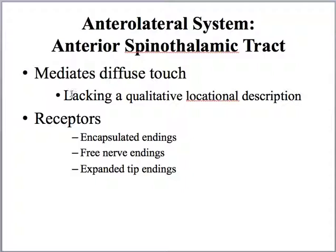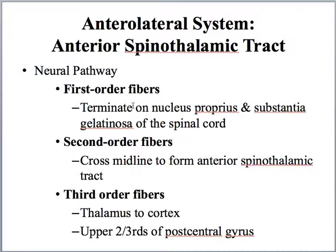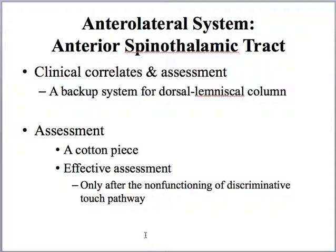The anterior lateral system — the anterior spinothalamic tract — mediates diffuse touch, lacking qualitative localization description. The nerve endings involved are encapsulated endings, free nerve endings, and expanded tip endings. The first-order neurons synapse onto the nucleus proprius or substantia gelatinosa in the spinal cord, giving rise to second-order spinal thalamic projection neurons. They project to the thalamus — the ventral posterior thalamic nucleus — and then to the cortex, specifically the upper two-thirds of the postcentral gyrus. The anterior spinothalamic tract is essentially a backup to the dorsal lemniscal column.